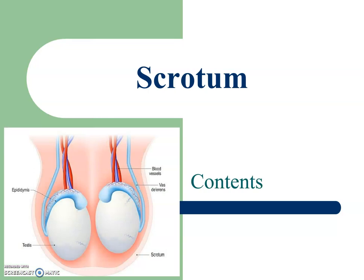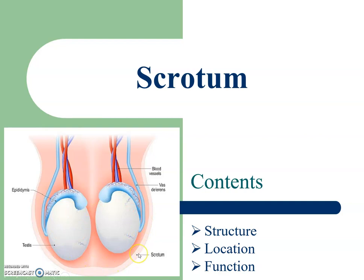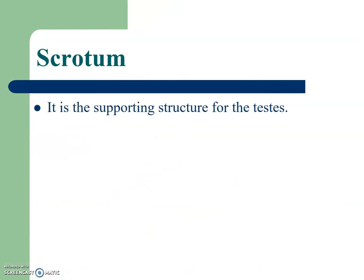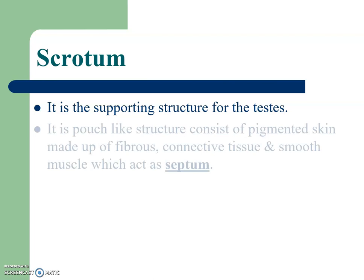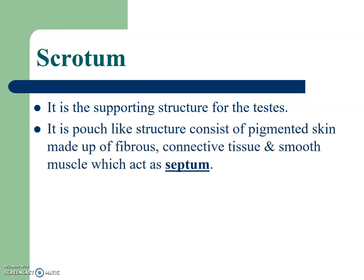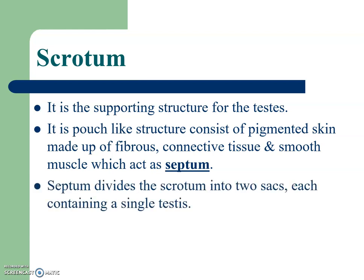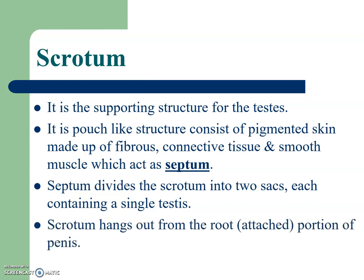Scrotum: we will study its structure, location, and function. In the diagram you can see the outer covering of the testes is called the scrotum. It is the supporting structure for the testes — a pouch-like structure consisting of pigmented skin made up of fibrous connective tissue and smooth muscle which acts as a septum. The septum divides the scrotum into two sacs, each containing a single testis. The scrotum hangs from the root, the attached portion of the penis.